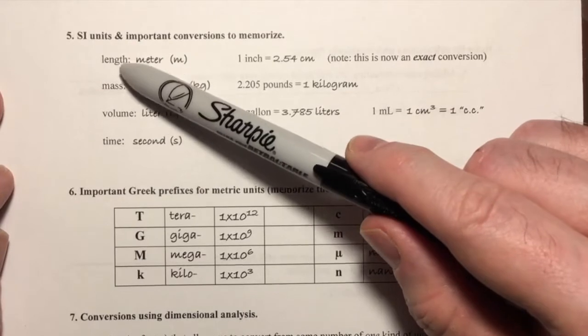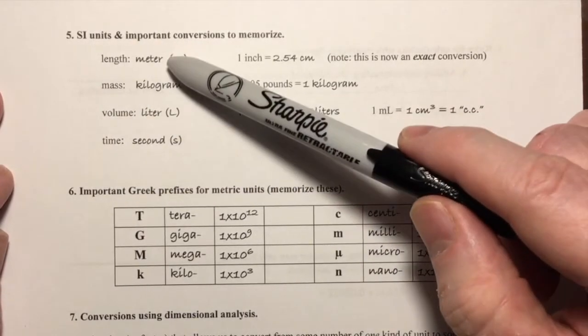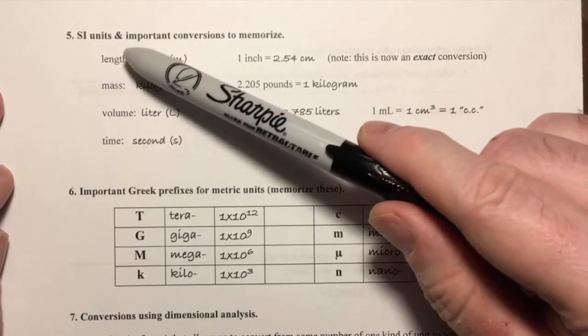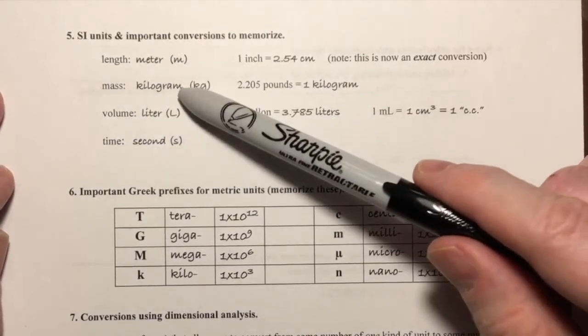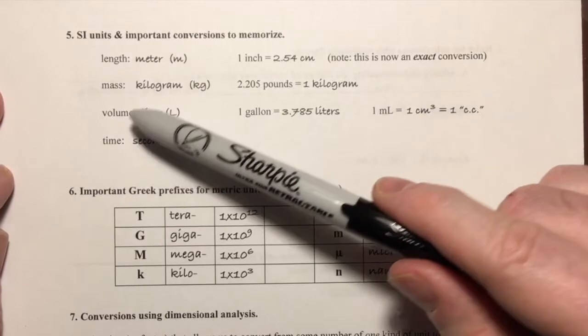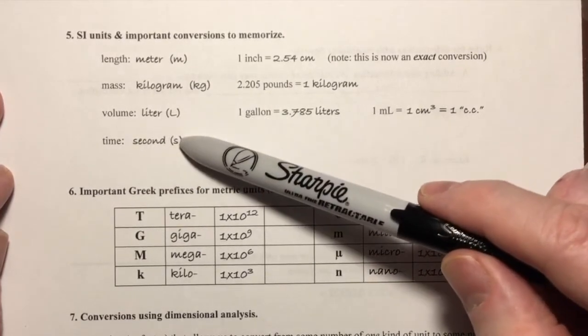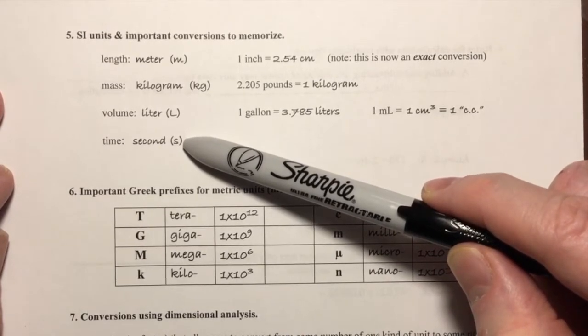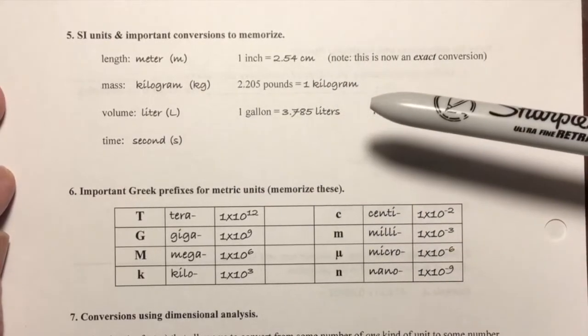First of all, I want to make sure that we understand that there are four base units in the metric system. For length it's the meter with a lowercase m. For mass it's the kilogram, lowercase kg. For volume it's the liter, and that's a capital L. For time, seconds, it's S. Sometimes you'll see seconds abbreviated SEC, but S is the appropriate metric or SI abbreviation.